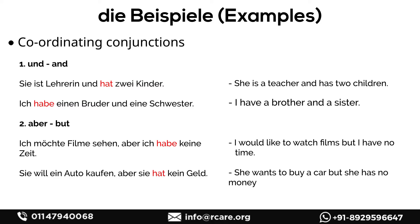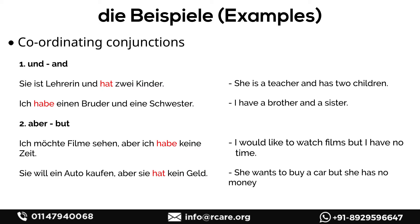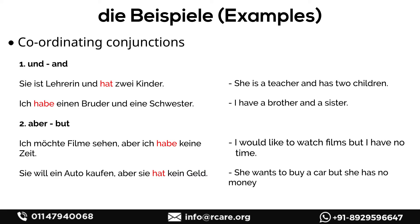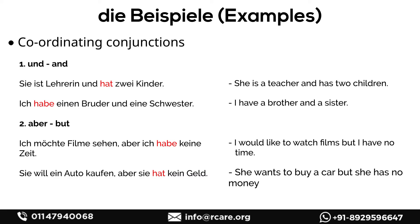Now coordinating conjunctions — observe that whenever we use a coordinating conjunction, the verb position remains the same, at the second position. We just put the conjunction between the sentences and join them. The second example is 'aber' (but): 'Ich möchte Filme sehen, aber ich habe keine Zeit' — I would like to watch films but I have no time. 'Sie will ein Auto kaufen, aber sie hat kein Geld' — she wants to buy a car but she has no money.